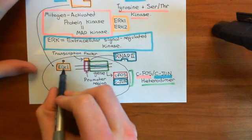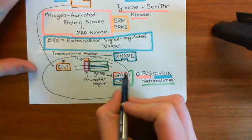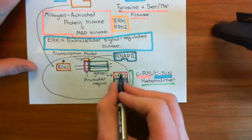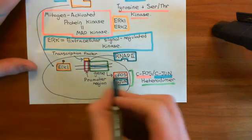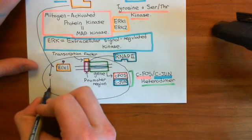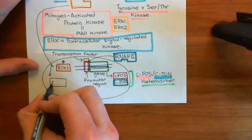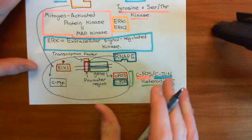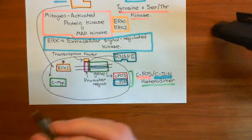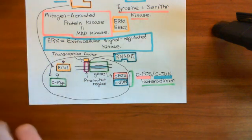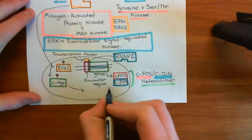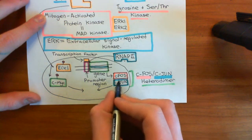Once ELK1 has been phosphorylated by ERK, you get the formation of these C-fos/C-jun heterodimers because we've increased the expression of C-fos. These then act as transcription factors themselves. Another direct target of the ERK enzymes is a transcription factor known as c-Myc. ERK enzymes phosphorylate c-Myc, resulting in its activation. c-Myc as an active transcription factor does pretty much the same thing as C-fos/C-jun heterodimers.